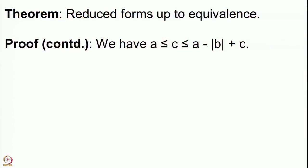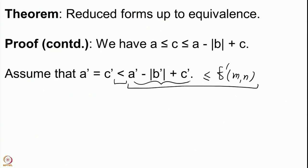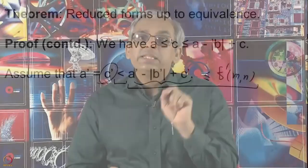For the next case, we assume a prime equals c prime but there is a strict inequality at the next level: c prime is strictly less than a prime minus mod b prime plus c prime. The reason for the strict inequality is that we know whenever we have integers m comma n with neither equal to 0, the value taken by f prime at m comma n is at least a prime minus mod b prime plus c prime. So if we are looking at a value equal to c prime, it must be taken when one of the two entries is 0.